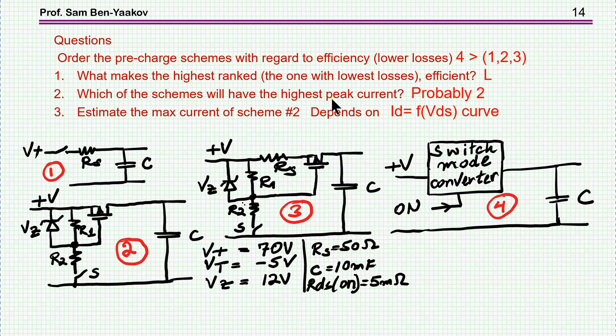Then, which of the schemes will have the highest peak current? Probably 2, although it depends on the curve ID as a function of VDS. And again, we cannot estimate the peak current here unless we look up the datasheet and see exactly what's the behavior of the particular transistor we are using.